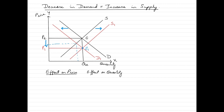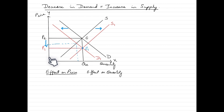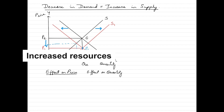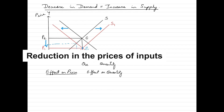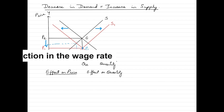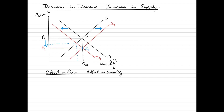Now let's look at an increase in supply. An increase in supply means producers are offering more of a product to the market at each price level — whether price is at Pe, rises above it, or falls below it, more quantity is being supplied. This can be caused by improved production efficiencies, increased resources, better technology, a reduction in input prices, or a reduction in the wage rate.